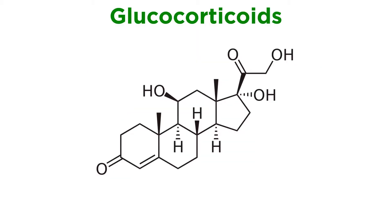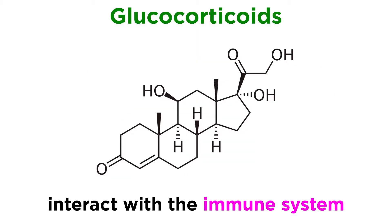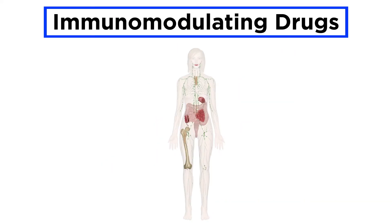In the previous tutorial, we discussed glucocorticoids, which interact with the immune system. Let's now generally discuss immunomodulating drugs that go some distance in establishing harmony during immune system dysregulation.